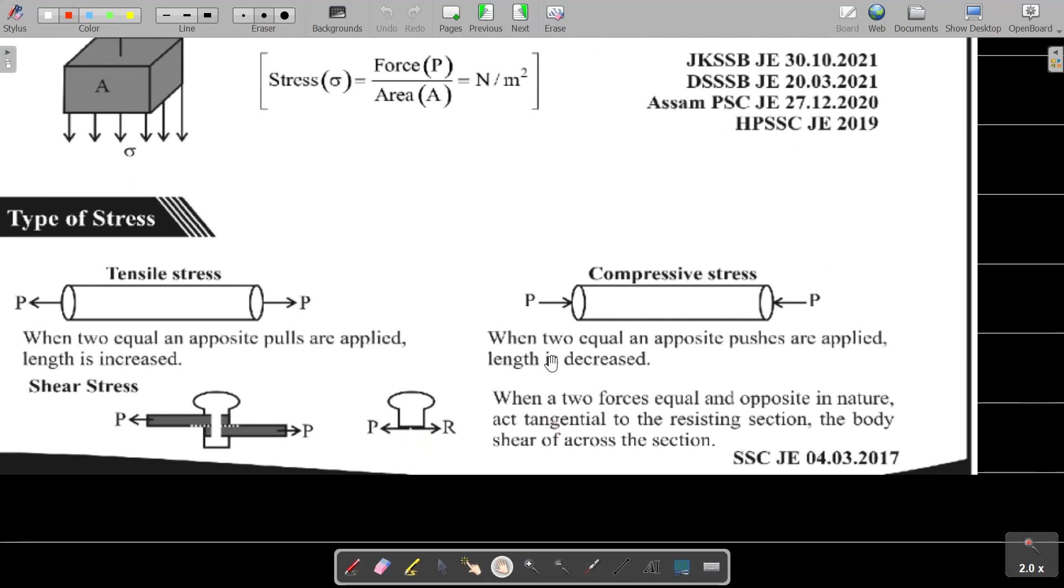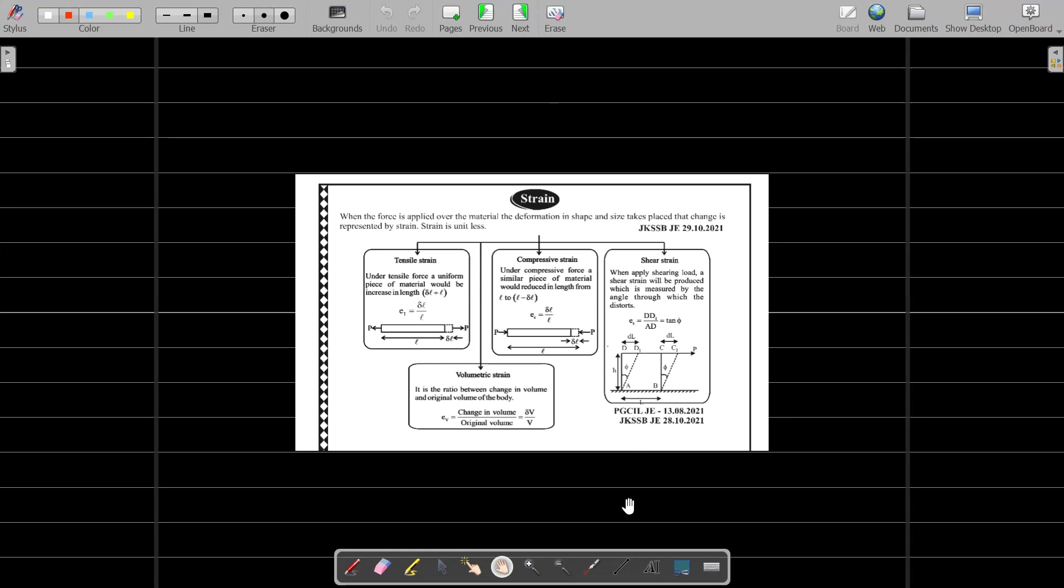Stress can be categorized as tensile stress, compressive stress, and shear stress. Tensile stress is when two equal and opposite pulls are applied and length increases. Compressive stress is when two equal and opposite pushes are applied and length decreases. Shear stress is when two forces act tangential to the resisting section causing shear across the section.